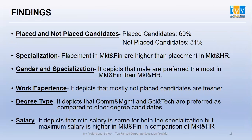So, what are my findings? Placed candidates are 69% and not placed candidates are 31%. For specialization, placement in Marketing and Finance is higher than placement in Marketing and HR. For gender and specialization, males are preferred the most in Marketing and Finance compared to Marketing and HR. For degree type, Commerce and Management, and Science and Technology, are preferred over other degree types. For salary, the minimum salary is the same for both specializations, but the maximum salary is higher in Marketing and Finance compared to Marketing and HR.